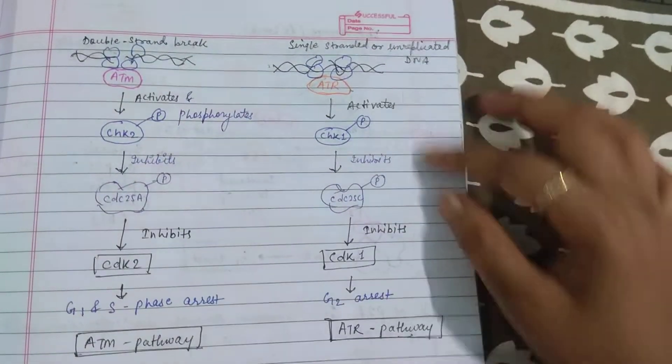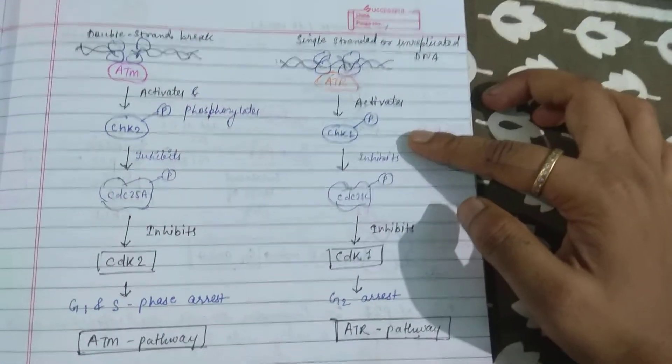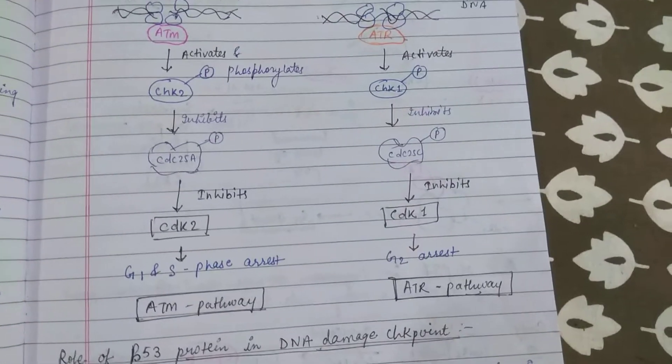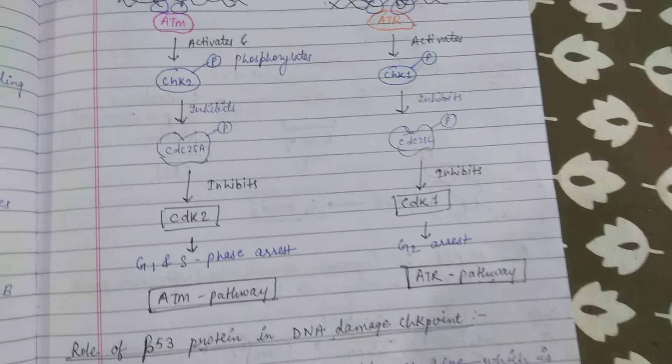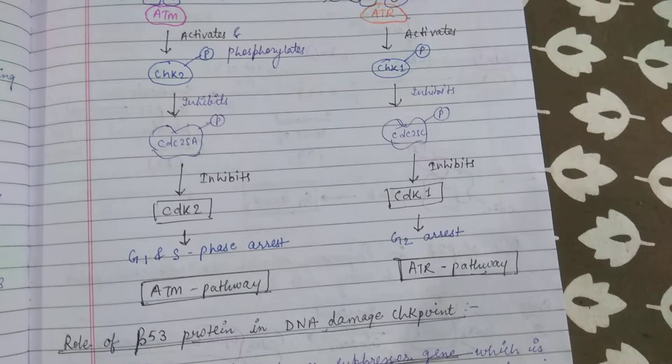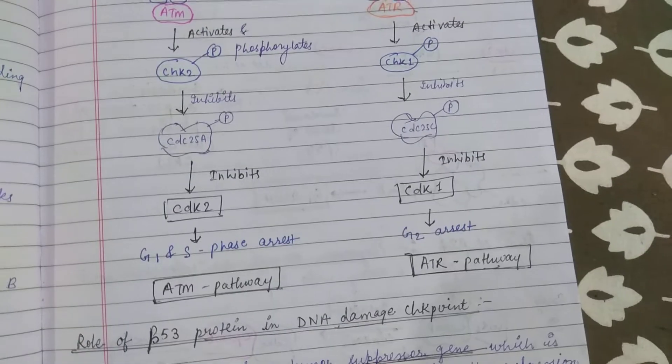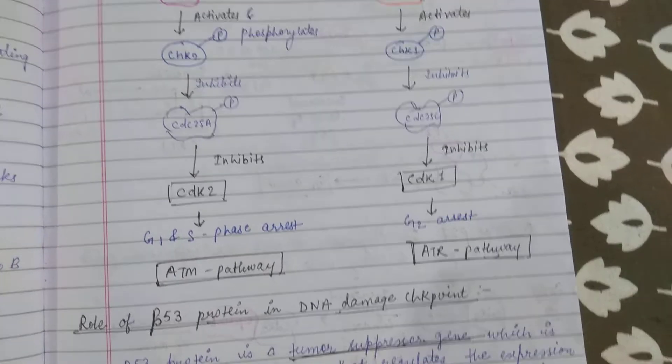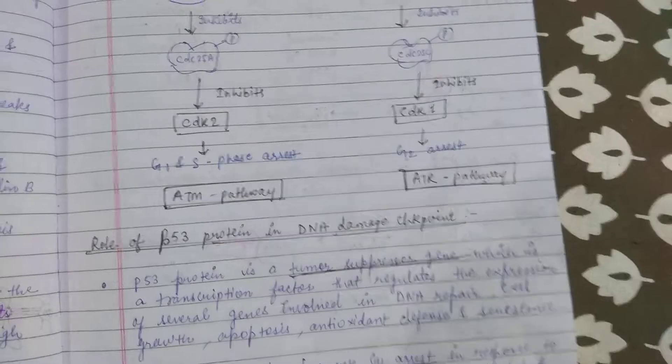In the ATR pathway, ATR phosphorylates CHK1, and CHK1 phosphorylates and inhibits Cdc25C, which is responsible for CDK1 activation. But CDC25 is inhibited by CHK1, so CDK1 doesn't perform its function and G2 arrest occurs. This is the ATR pathway.